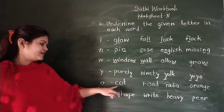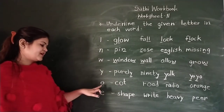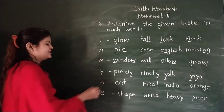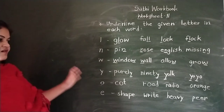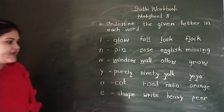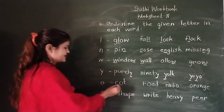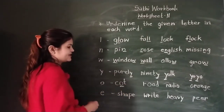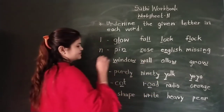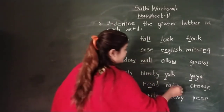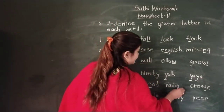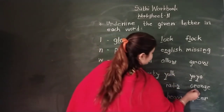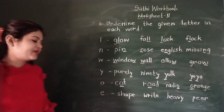Now which letter is this? This one is letter O. In 'road', see where letter O is - it guides us in this word. In 'radio', O is at the end. In 'orange', O is in the beginning.